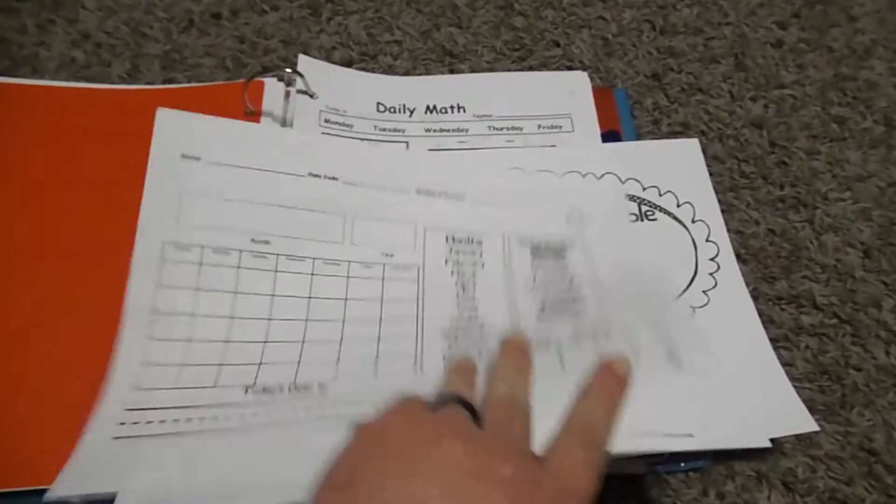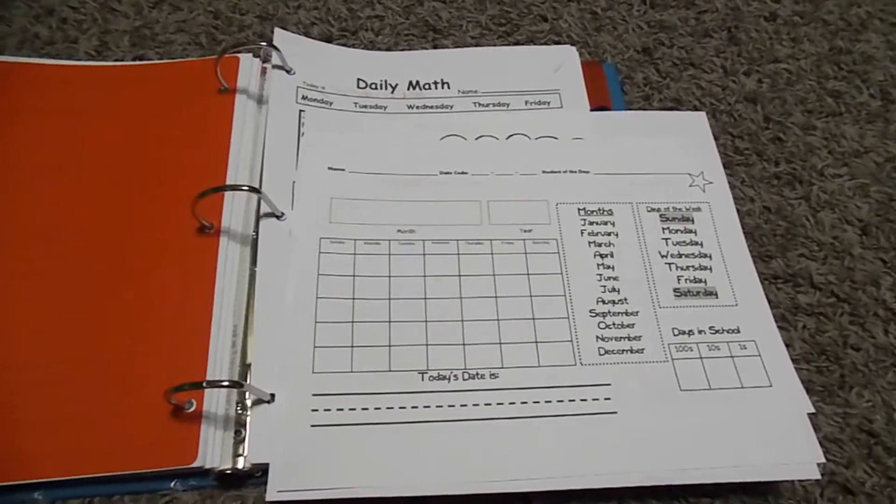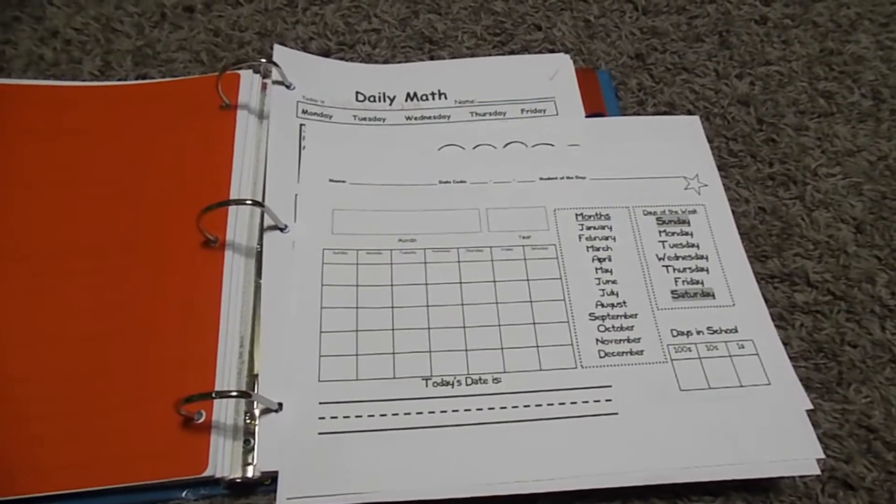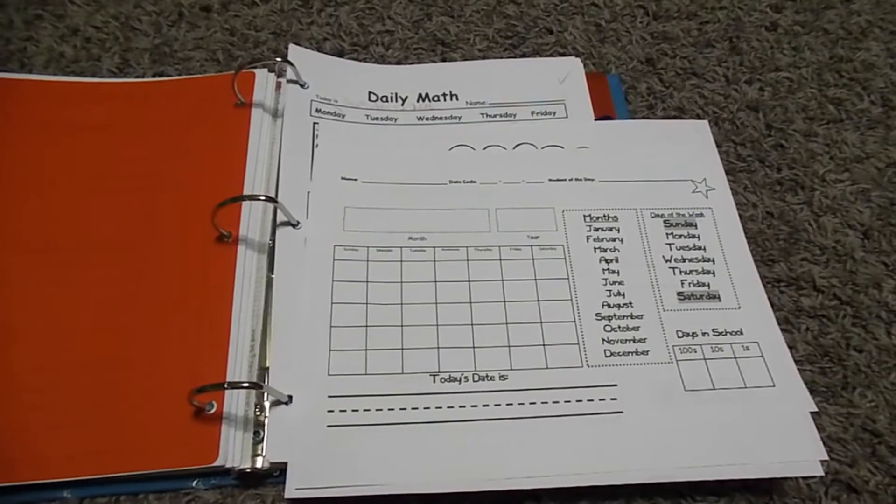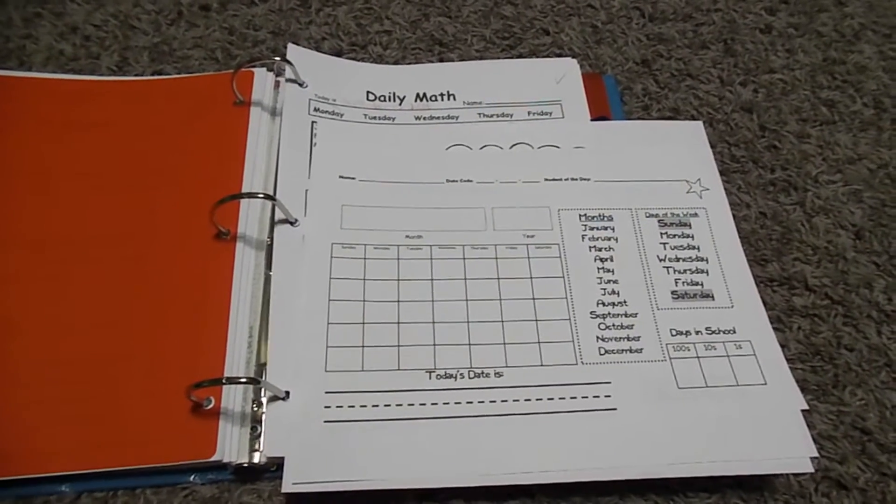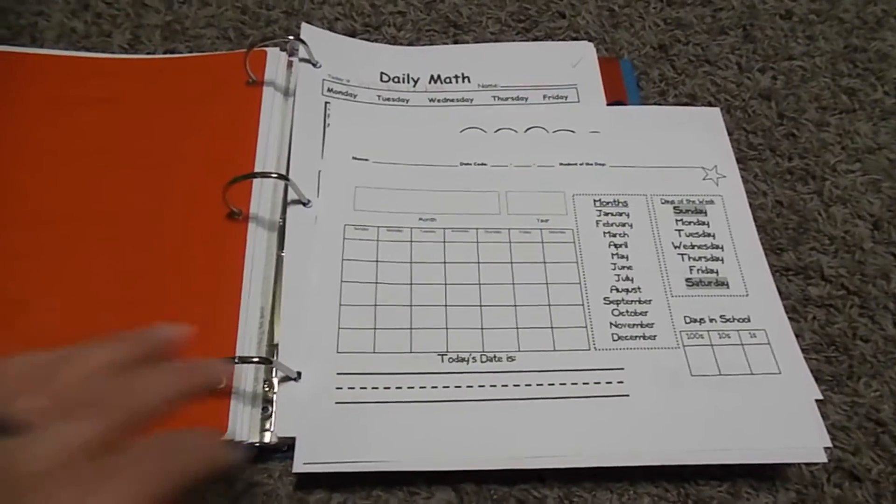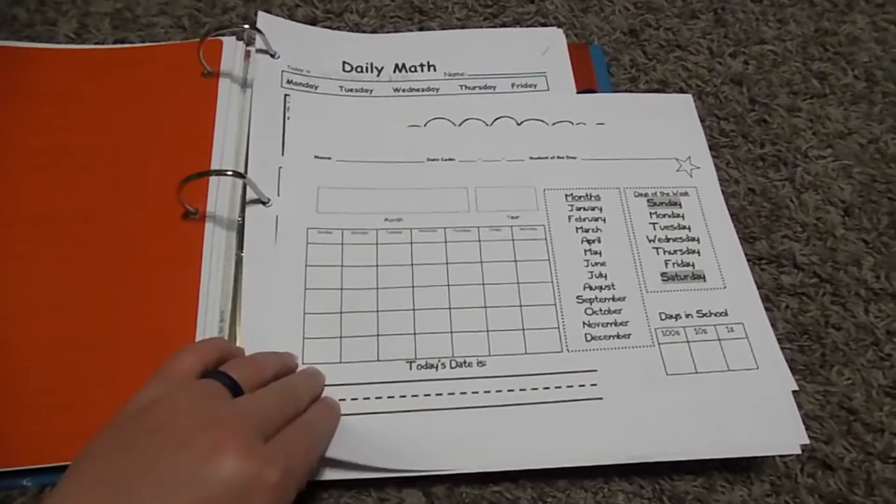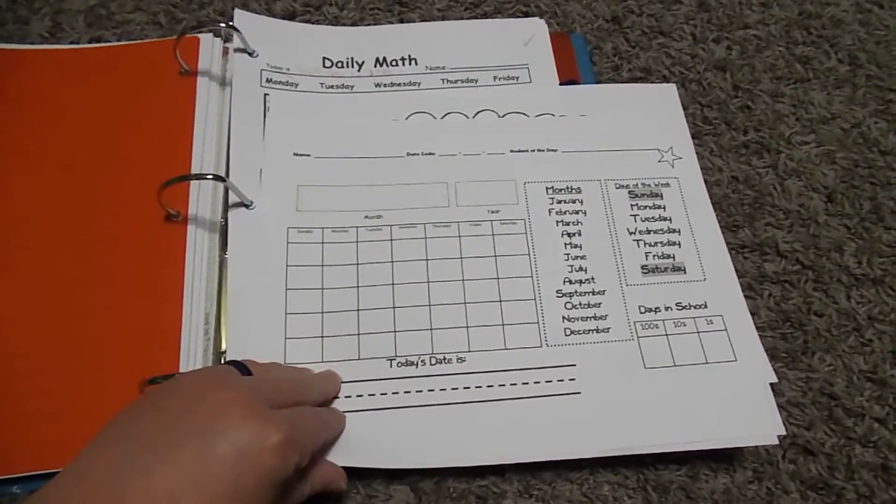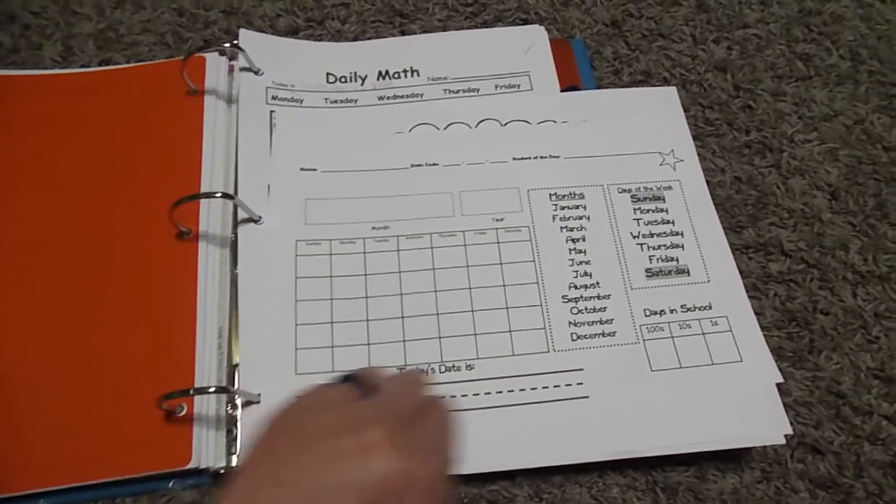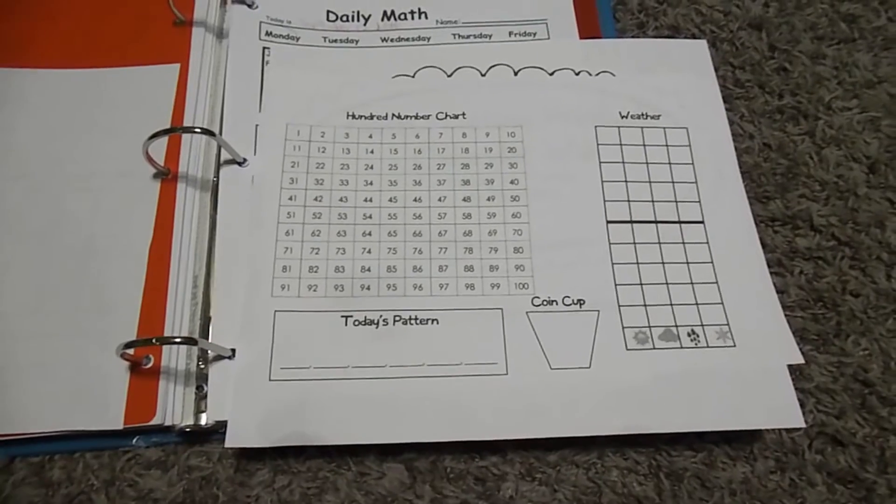And the first part of the year, first part of first grade, my daughter was still really working on how to write, writing her numbers, starting to write them 1 to 100, and learning how to write the months and tally marks and that kind of stuff. So this really gave a great practice for that. So the first part was a calendar and the days in school, writing things out. And then the second part was a numbers chart, coin cup, days, pattern, weather.